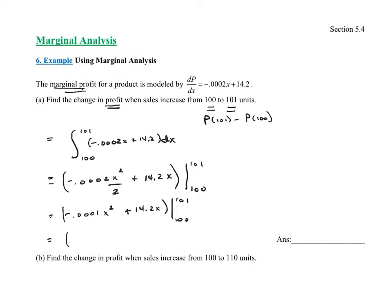Now let's plug in our numbers. We have negative 0.0001 times 101 squared plus 14.2 times 101, minus negative 0.0001 times 100 squared plus 14.2 times 100. Plug that into your calculator, being extremely careful with your parentheses. Rounding to the nearest cent, I'm getting approximately a change in profit of $14.18.